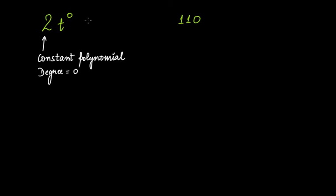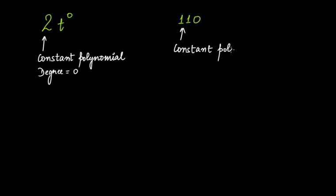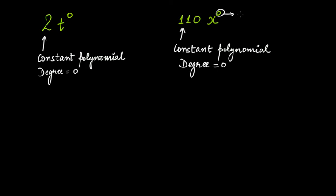Any variable raised to the power of zero is always 1, so it's actually 2 multiplied by 1. Any variable or any number raised to the power of zero is always 1. In the same way, 110 is also a constant polynomial whose degree is 0. We write it as 110 multiplied by x raised to the power of zero. That zero in the exponent tells us that the degree is actually zero.